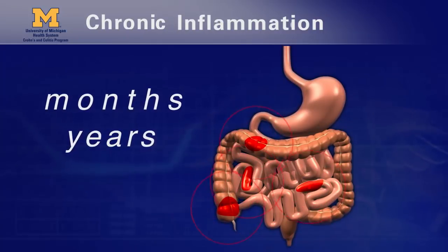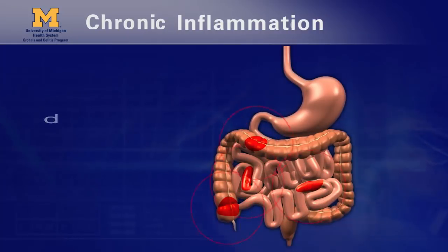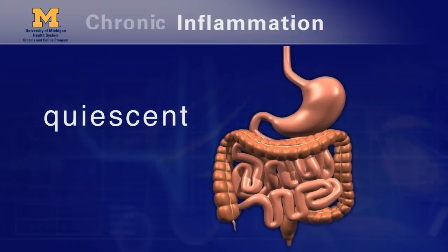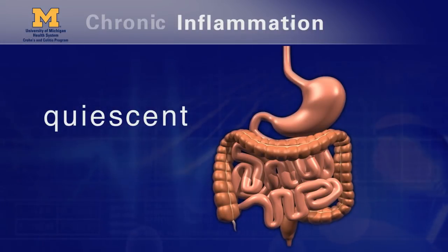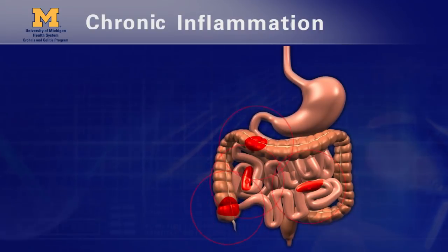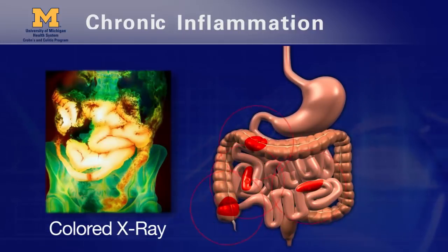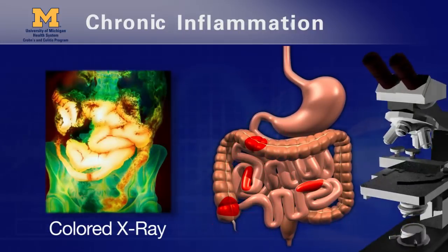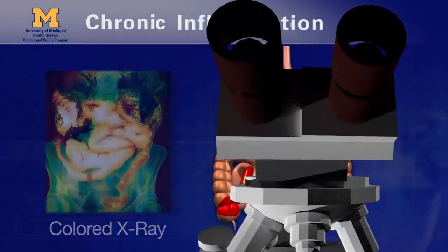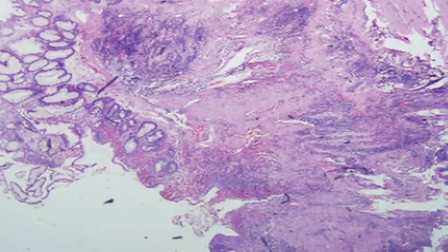The inflammation can quiet down or become quiescent for a while, but weeks, months, or years later, the inflammation can come back with a big flare of activity and symptoms. It is also chronic because the damage or distortion of the intestine lining is left behind when the intestine heals after a flare and can still be seen under a microscope.